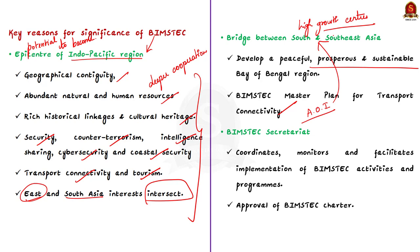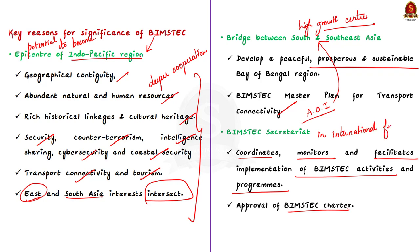The third reason is that the BIMSTEC Secretariat coordinates, monitors and facilitates the implementation of BIMSTEC activities and programs. Approval of a BIMSTEC Charter during this fifth summit will further augment its visibility and stature in international fora. The BIMSTEC Secretariat will become an establishment of global importance. From these three reasons, we know that BIMSTEC is an organization having growing value both in the Bay of Bengal region and in the global arena.